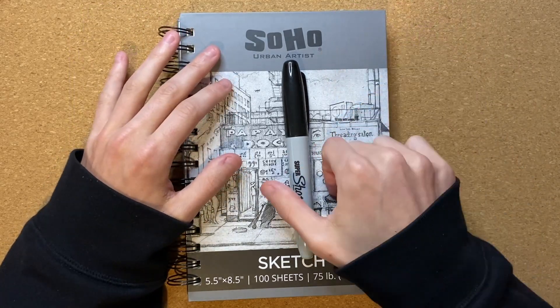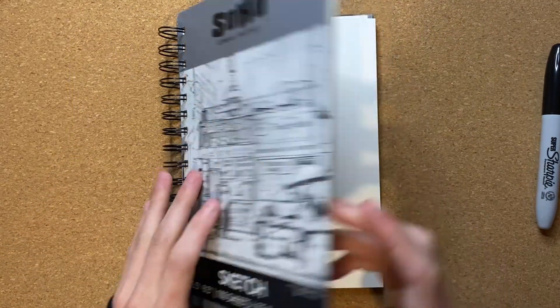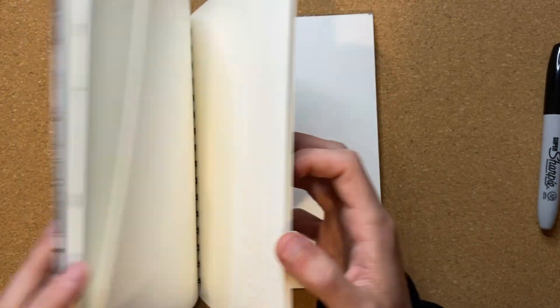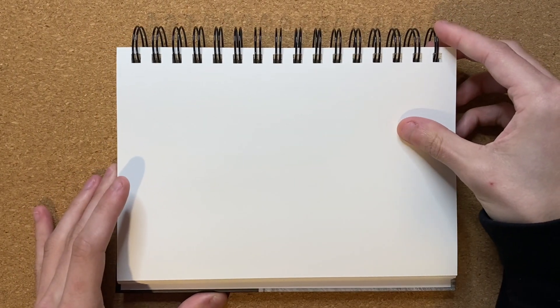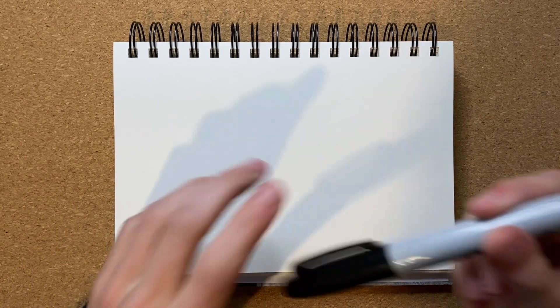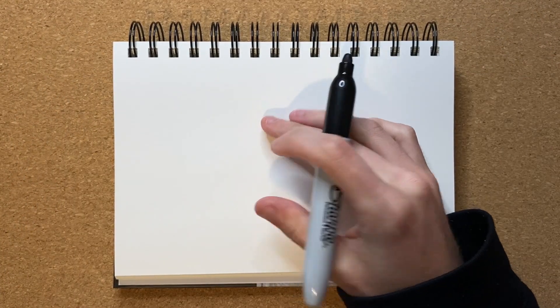So without further ado, let's go ahead and get right to it. Let's go ahead and flip my Soho Urban Artist Sketchbook open to an open page, and bring my phone holder down just a little bit. Let's make sure it's centered and everything, get the cap off, and get right to drawing.